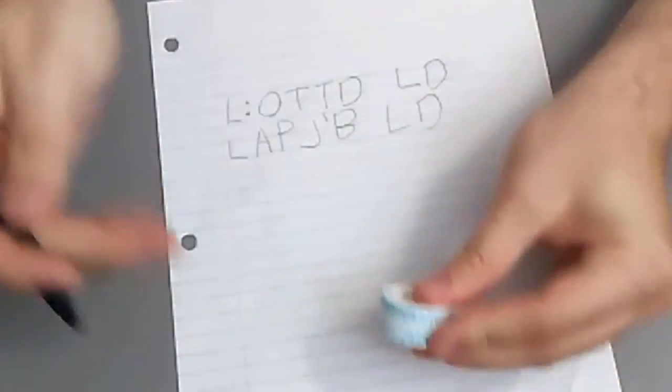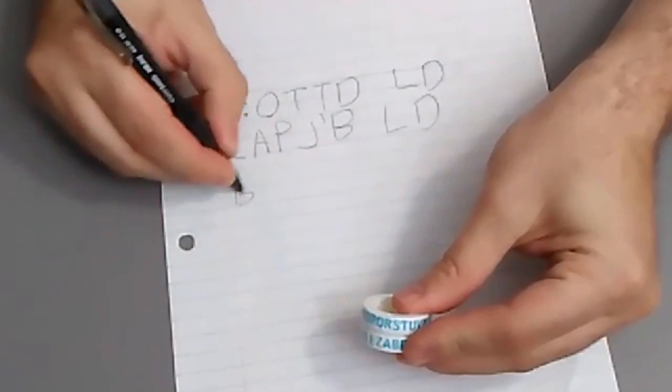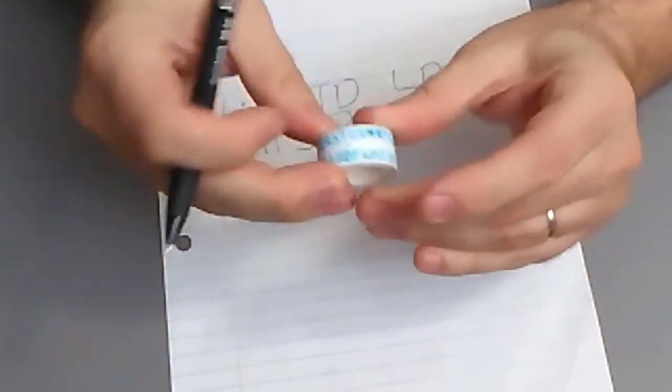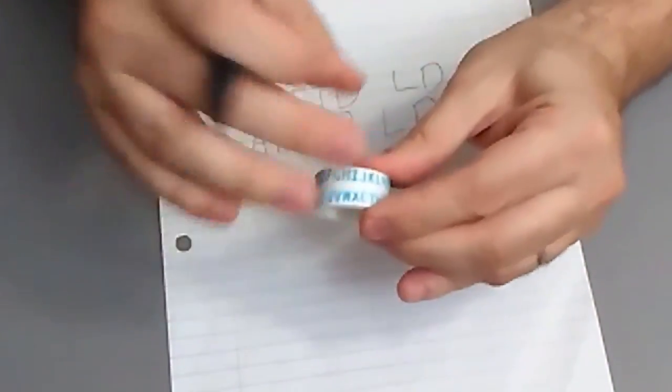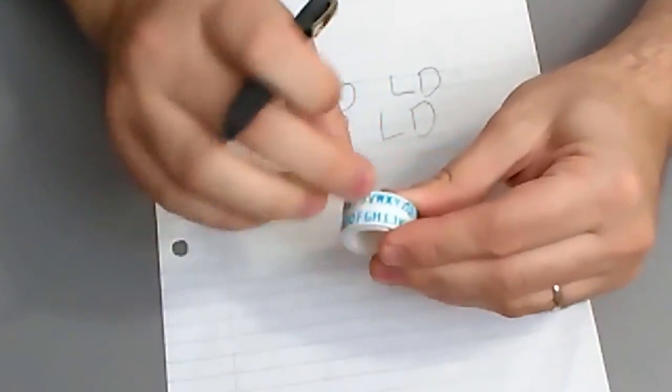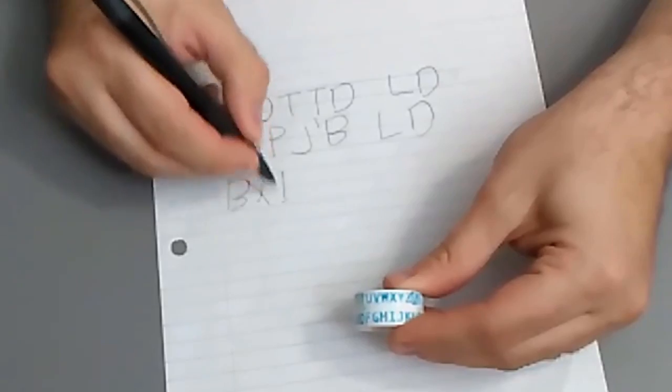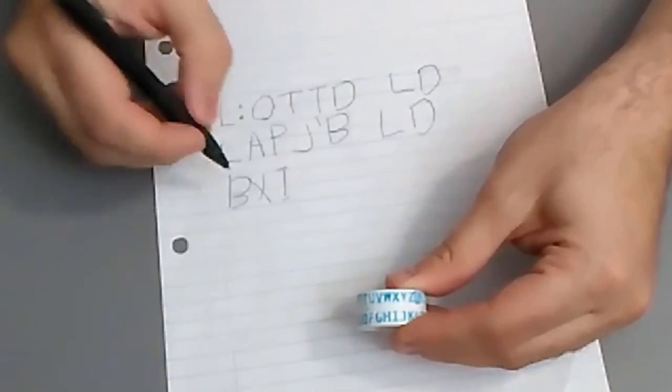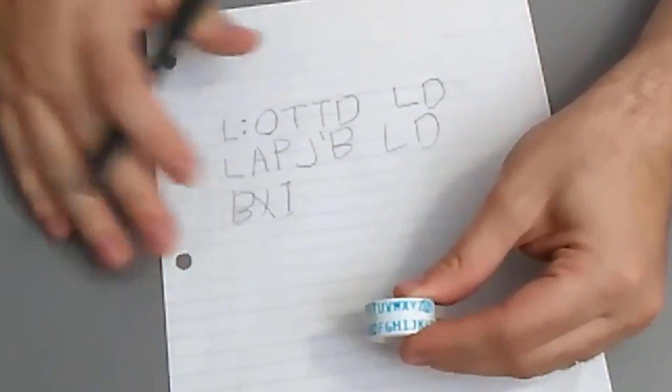And I'll go, okay, let's see, S is B, I is X, and X is I. That's kind of interesting. So that's my six, B, I, X, instead of S, I, X. For six there.